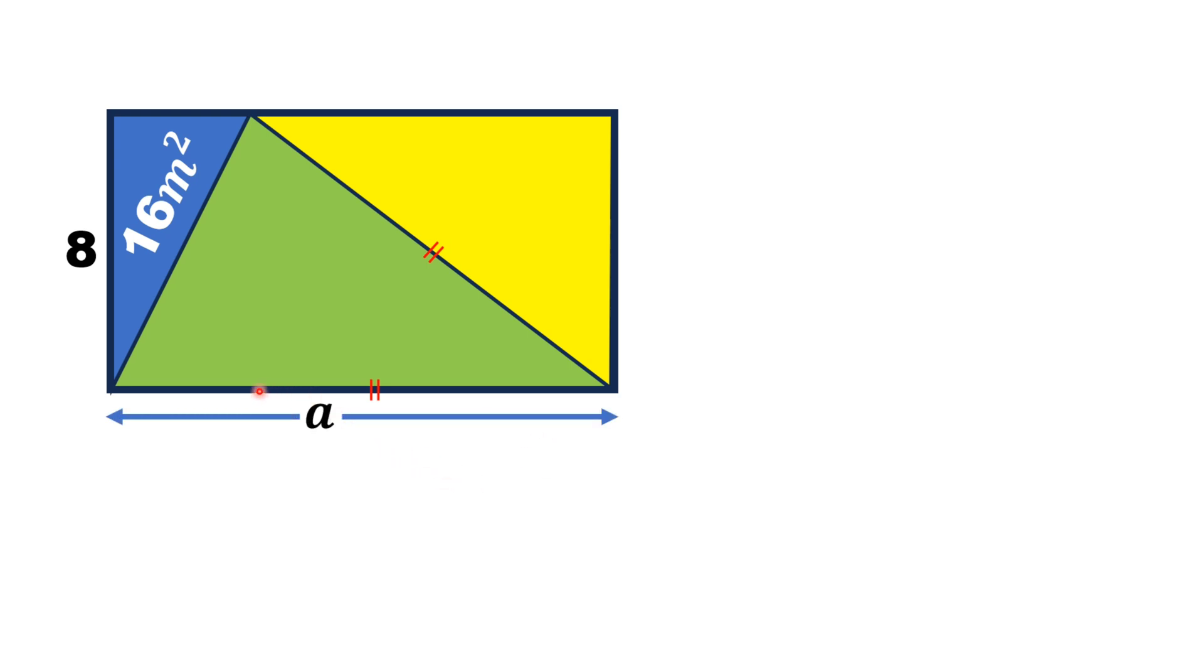Since this length is equal to this length, which is one side of the green triangle and hypotenuse of the yellow triangle, this side is also A.